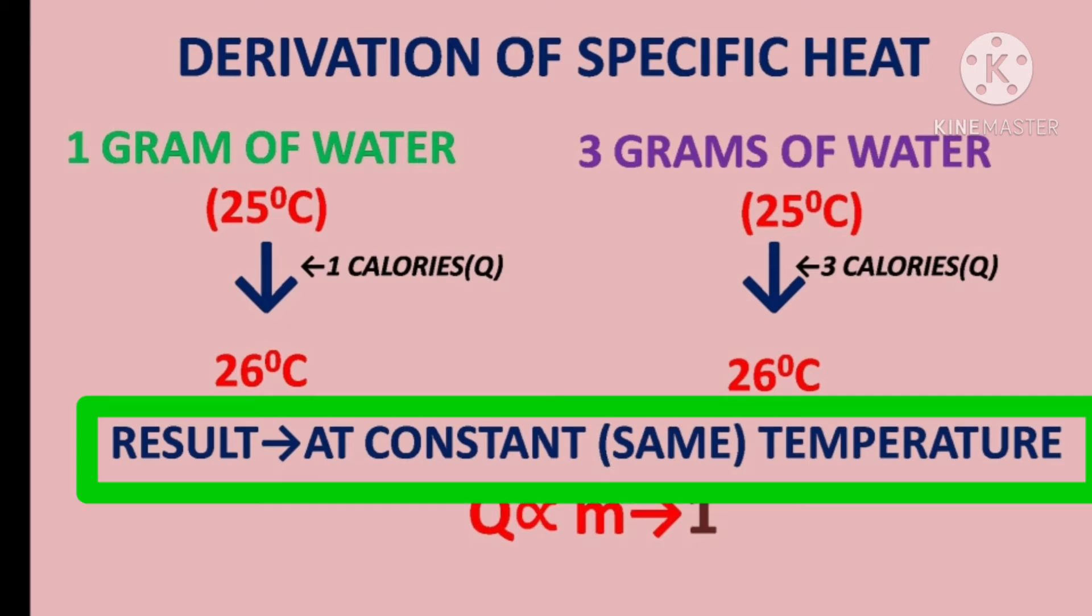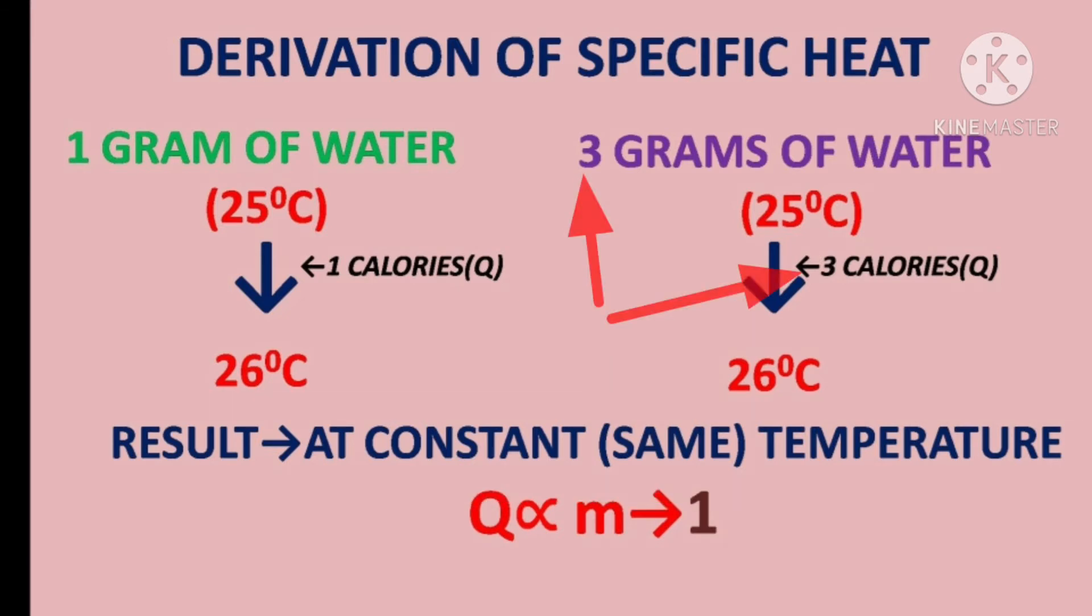Here, both temperatures are same but high mass of water required high quantity of heat and low mass of water required low quantity of heat to raise its temperature. So, if mass of the substance increases, required heat also increases. If mass of the substance decreases, required heat also decreases. Therefore, heat is directly proportional to mass.